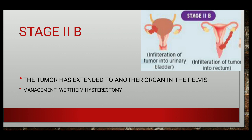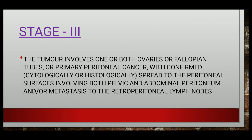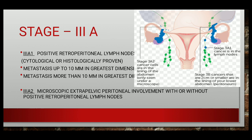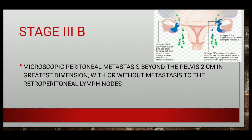In stage 3, the tumor involves one or both ovaries or fallopian tubes, or primary peritoneal cancer, with confirmed cytological or histological spread to peritoneal surfaces involving both pelvic and abdominal peritoneum, and/or metastasis to the retroperitoneal lymph nodes. Stage 3a is further divided into 3a1 and 3a2. In 3a1, there are positive retroperitoneal lymph nodes only — metastasis up to 10 mm, and metastasis more than 10 mm in greatest dimension. In 3a2, there is microscopic extra-pelvic peritoneal involvement with or without positive retroperitoneal lymph nodes.